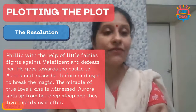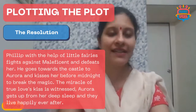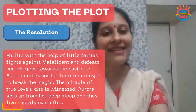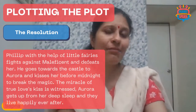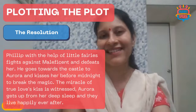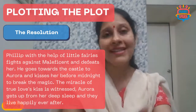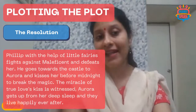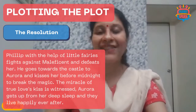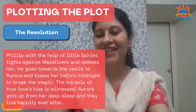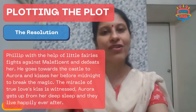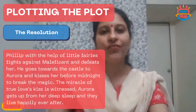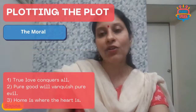The second element: the resolution. Prince Philip — the charming prince — with the help of the little fairies successfully fights against the evil witch and defeats her. He then goes to the castle and kisses Aurora before midnight. That is the power of true love — this action breaks the magic spell, Princess Aurora wakes from her deep sleep, and the prince and princess live happily ever after.